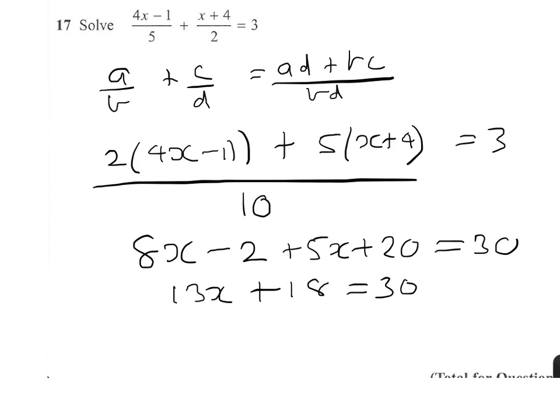So we now take the 18 away from both sides, take the 18 off here and take it off 30. And we're going to have 13x equals 30 take 18, which is 12. So x equals 12/13.